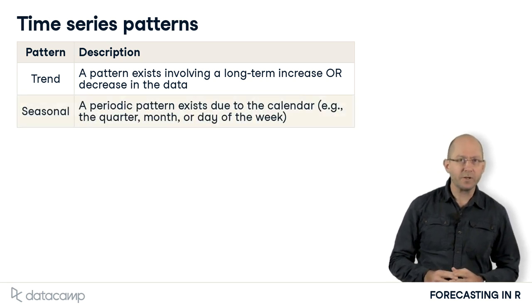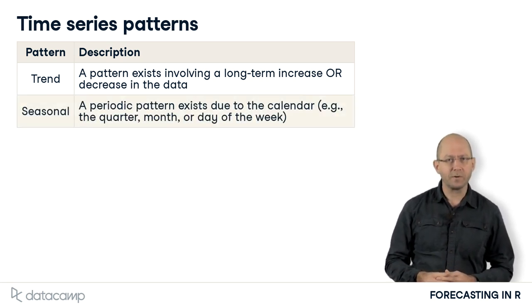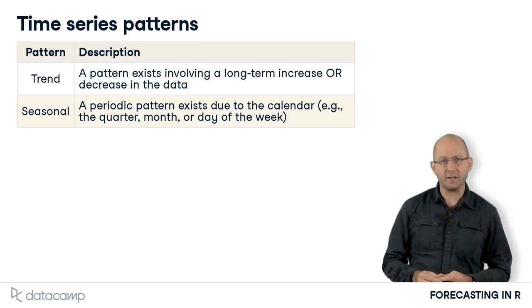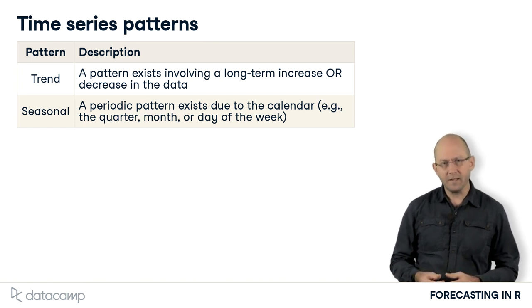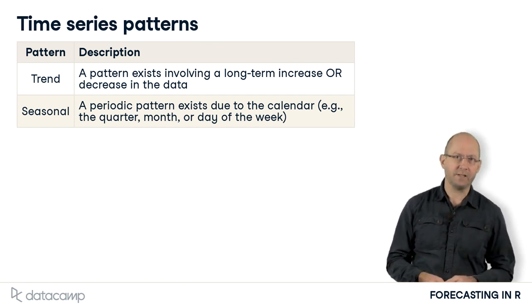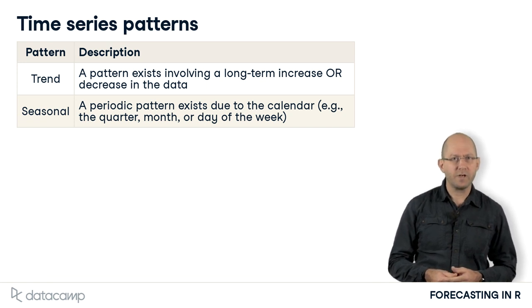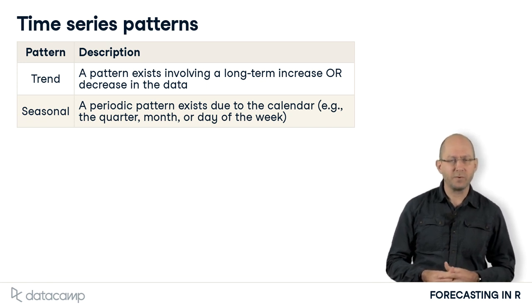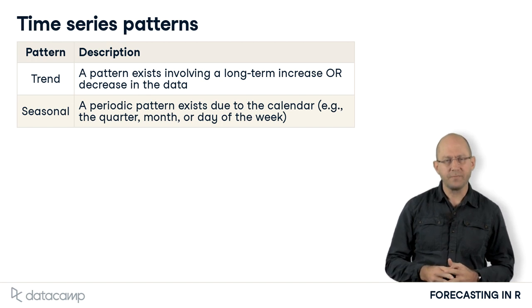Seasonality occurs when there is a regular pattern in the time series related to the calendar — for example, a yearly pattern, a weekly pattern, or a daily pattern. Whenever the behaviour of a time series is influenced in a periodic manner by the calendar, we call it seasonal.